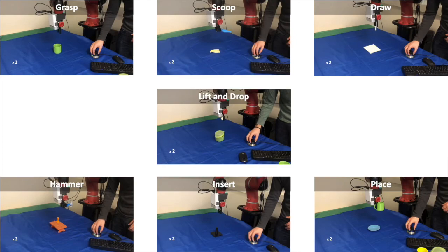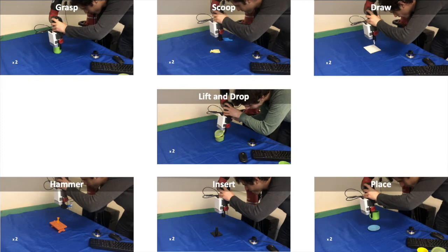To evaluate our method, we use seven everyday tasks that we perform from different initial configurations, with and without distractor objects.